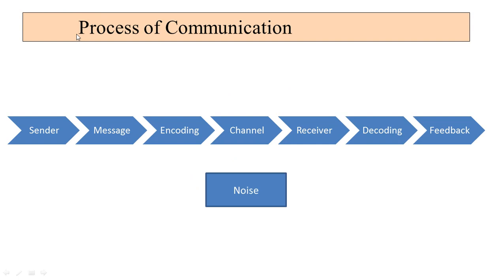Now let's move to the process of communication, which is another important topic for your UGC NET exam. We will see the different steps used in the communication process. The steps are: sender, message, encoding, channel, receiver, decoding, feedback — and there is also noise. We will understand the process in detail.